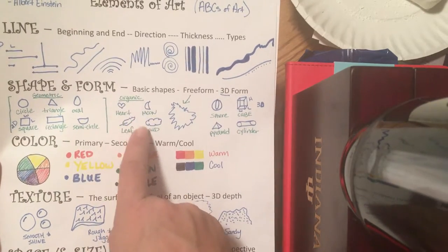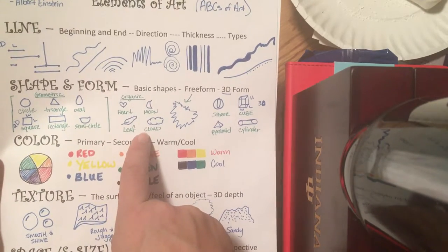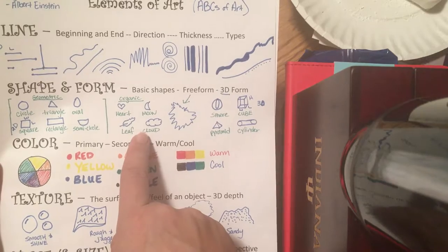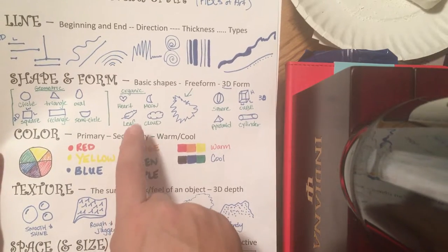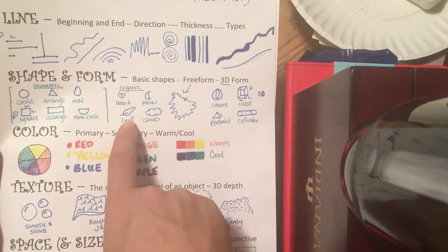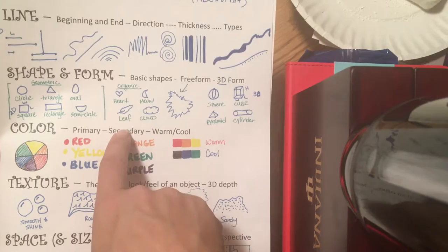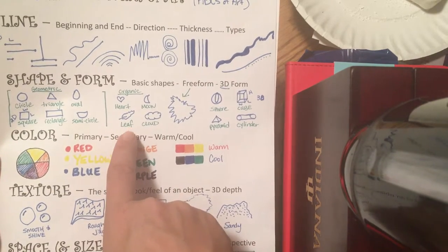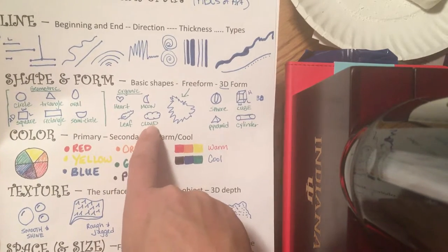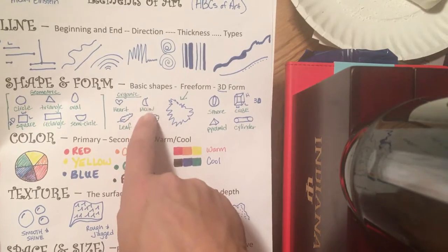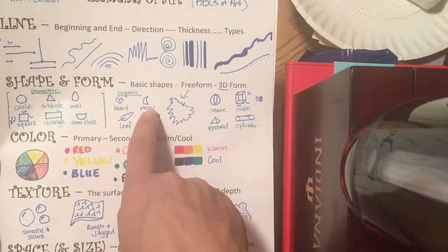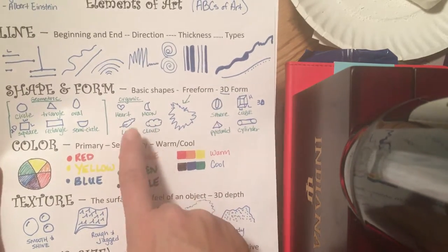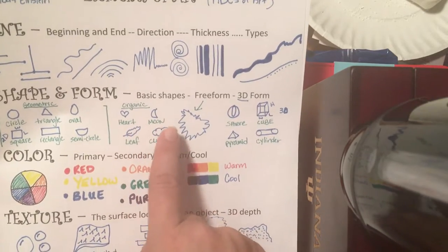Then there are organic shapes. Have any of you heard of organic shapes before? A leaf on a tree is an organic shape because it's made by nature. The same with a cloud, the shape of the crescent moon, and a heart. Those are natural shapes, or organic shapes.